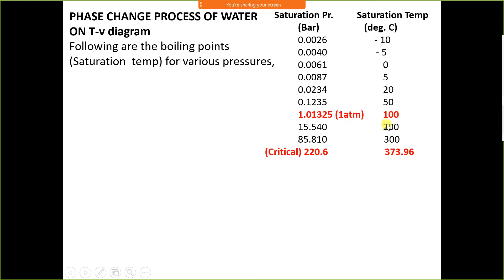To boil water above 100 degree Celsius, pressure must be increased. At 15.54 bar, water boils at 200 degree Celsius; at 85.81 bar, it boils at 300 degree Celsius. At the critical condition — 220.6 bar and 373.96 degree Celsius — this is called the critical point.